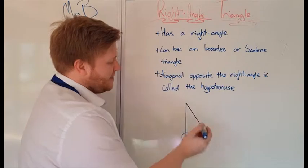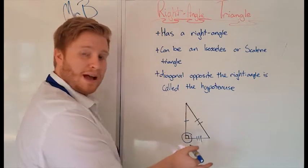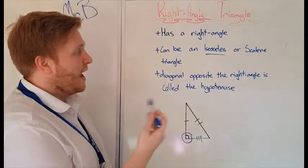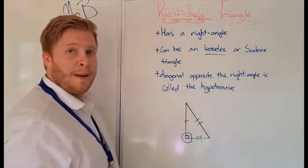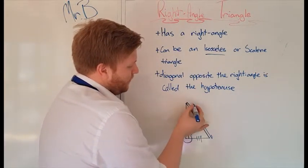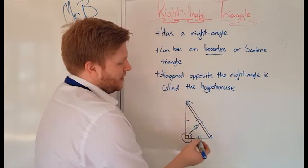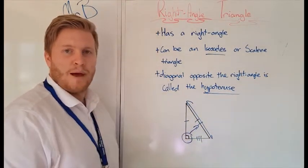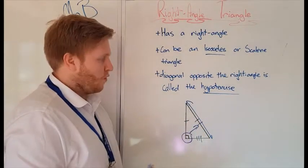It can be an isosceles or scalene. This one is a scalene because all the sides are different lengths, but if you had two sides that were the same length and a right angle, you would have an isosceles. So you just have to know it's a right angle triangle, then you think of the rules for isosceles or scalene. And this diagonal here is opposite the right angle, there's the right angle there. That's what we call the hypotenuse. Now, that's used for some other maths that maybe you'll learn later on, but that's what it actually is, the diagonal opposite the right angle.